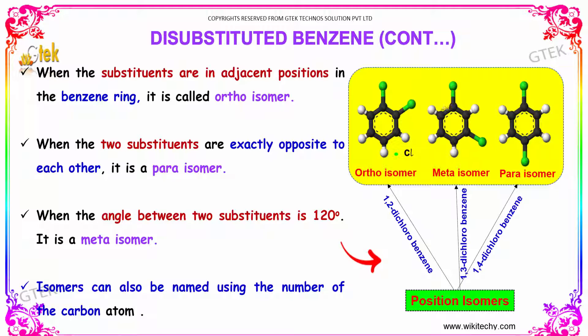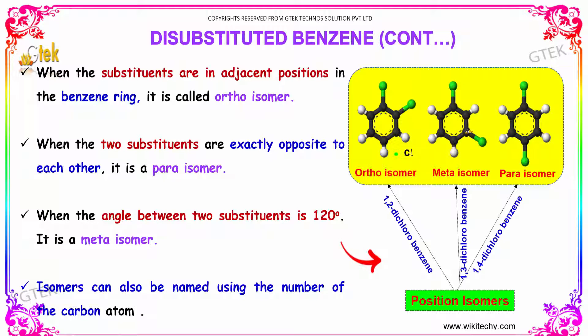Isomers can also be named using the number of the carbon atoms. That is, ortho is known as 1,2, whereas meta can be named as 1,3, and para can be named as 1,4.